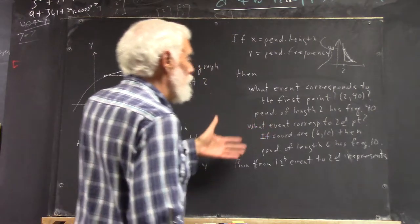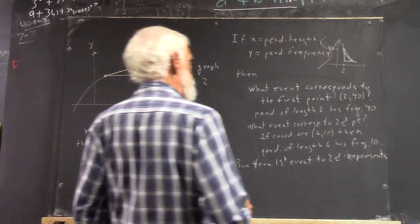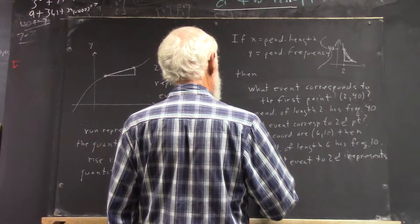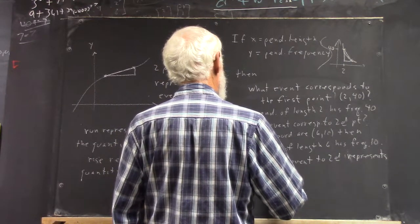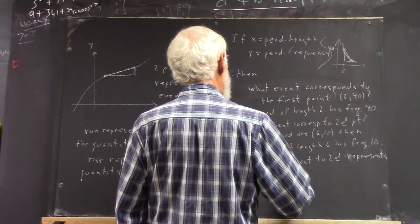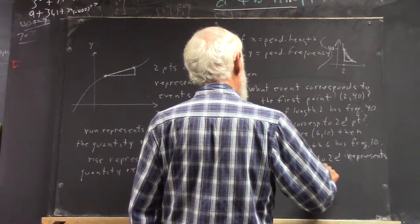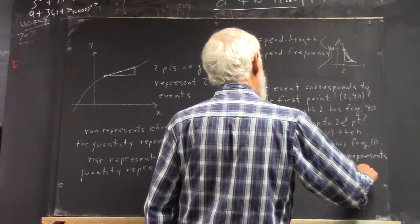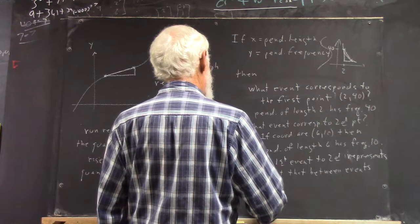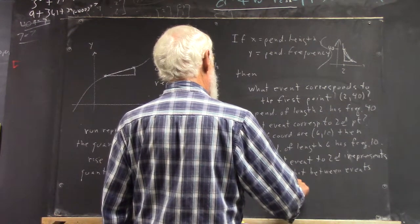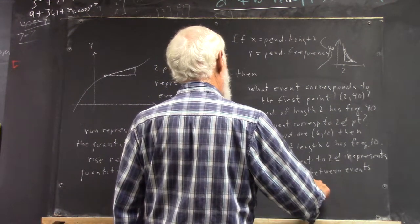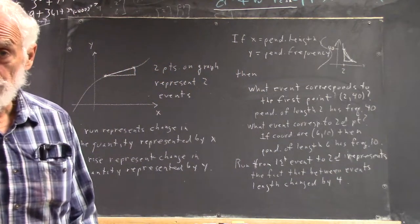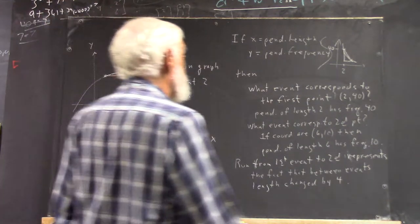Now, I'm going to say that this represents the fact that between the two events, length changed by four, because that, of course, is the run.